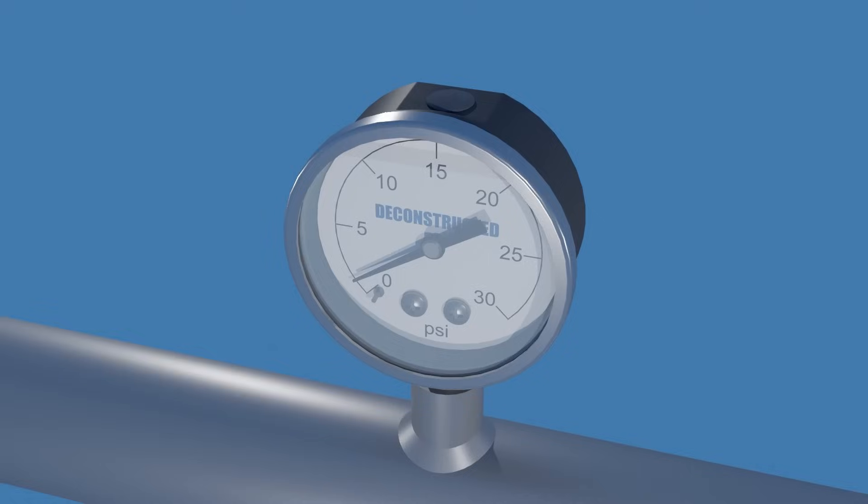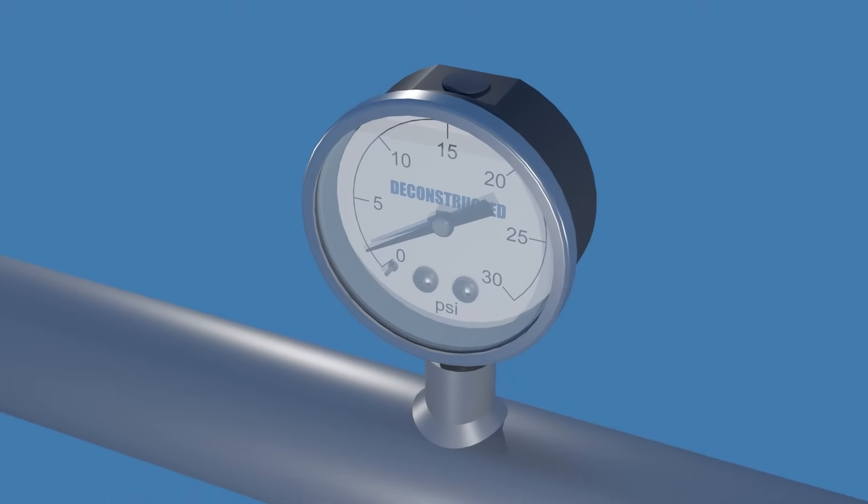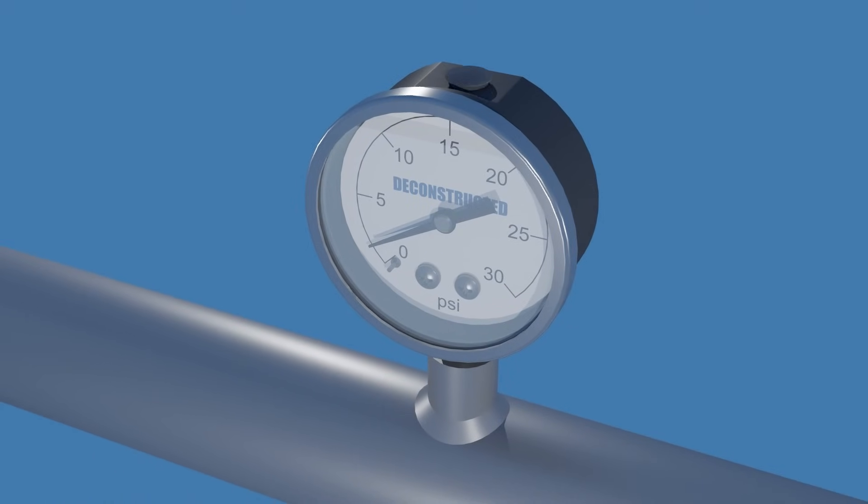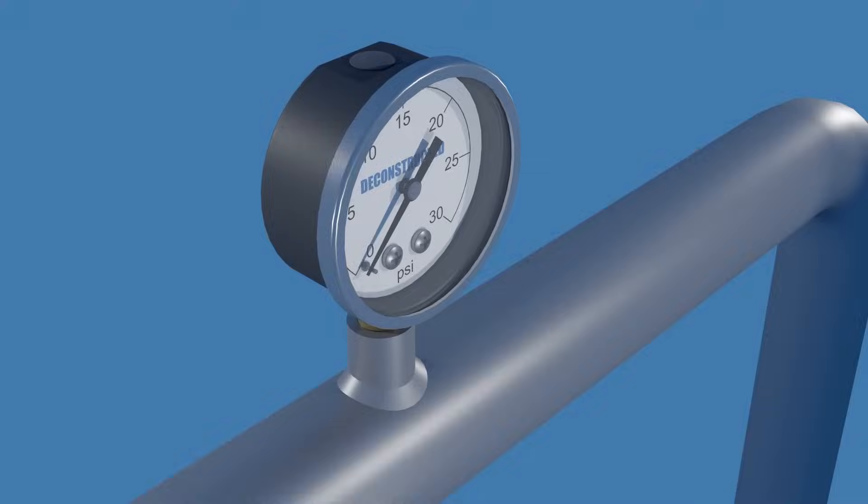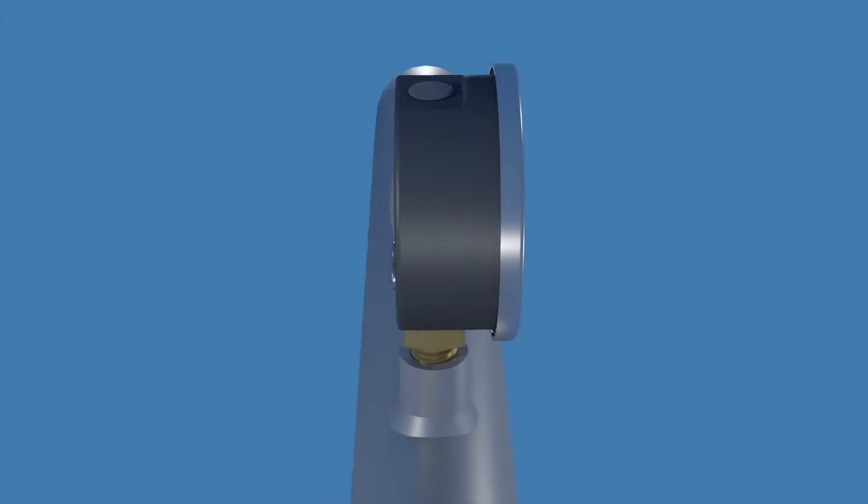Temperature variations during shipment and operation can cause the liquid fill to expand and contract, changing the pressure inside the sealed case, which can reduce the accuracy of the reading. Venting is sometimes required to release excess pressure. We will look at the reasons we use dry versus liquid filled gauges in more detail later in this video.